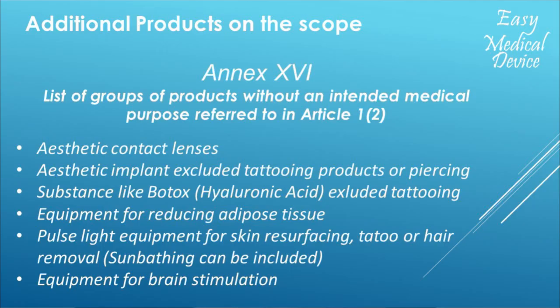Now I will show you the annex related to additional products that have no medical purpose but are considered as medical devices. This is Annex 16. On this annex, you will have a full paragraph with all products falling under the medical device regulation but with no medical purpose. Instead of copying all the sentences, I translated them into one sentence or one product name each.